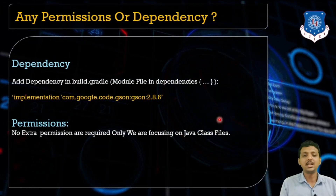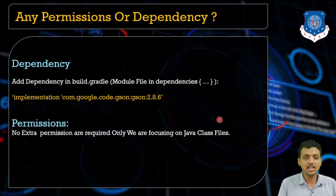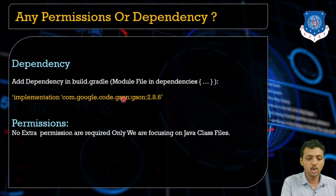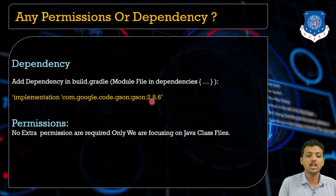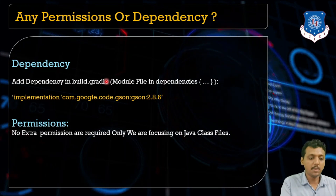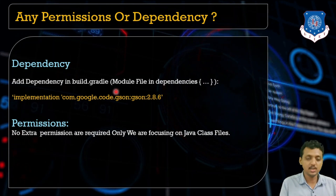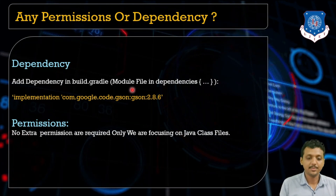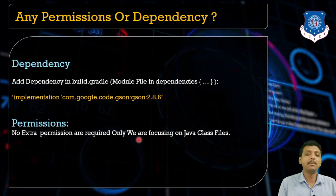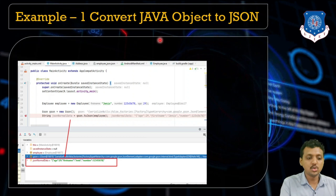Gson also allows pre-existing or unmodified objects to be converted to and from JSON. To use this library, you just need to add one dependency: implementation 'com.google.code.gson:gson:2.8.6'. Add this in your module-level build.gradle file. There is no extra permission needed to implement Gson.